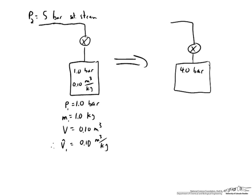I have drawn out the situation here based on the problem statement. We have a tank that initially is at a pressure of 1 bar with a mass of 1 kg and total volume of 0.10 m³. So we can get the per mass volume of the water initially in the tank: 0.10 m³ per kg. This allows us to specify two state variables, the pressure and the per mass volume, so we can determine all other properties including the internal energy.